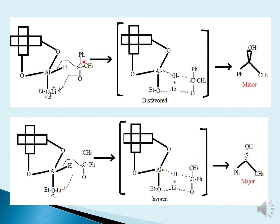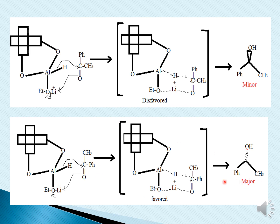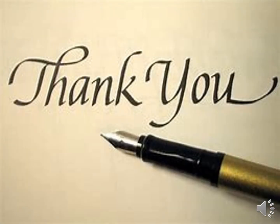Taking S-BINAL-H: in one direction, the bond shifts, lithium is taken up, and a transition state forms — resulting in the minor product. You check whether it is S or R configuration to determine major vs. minor. In the favored direction, the bond shifts to form a transition state which is favored. Re-face and si-face play an important role here: if it is the re-face, it results in the minor product; if it is the si-face, it gives the major product.